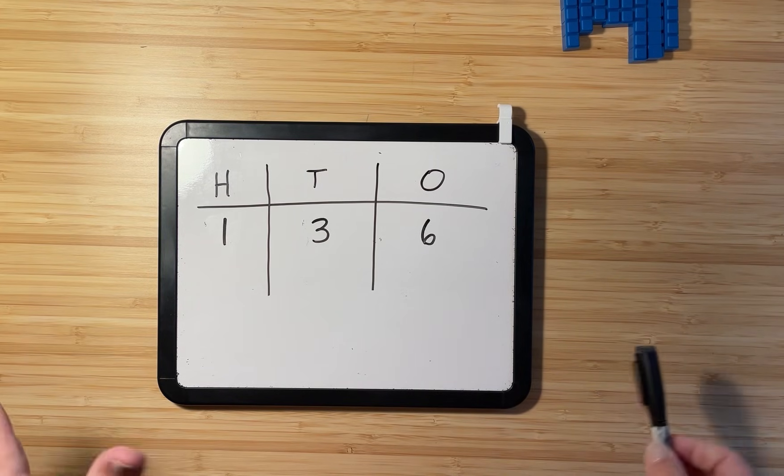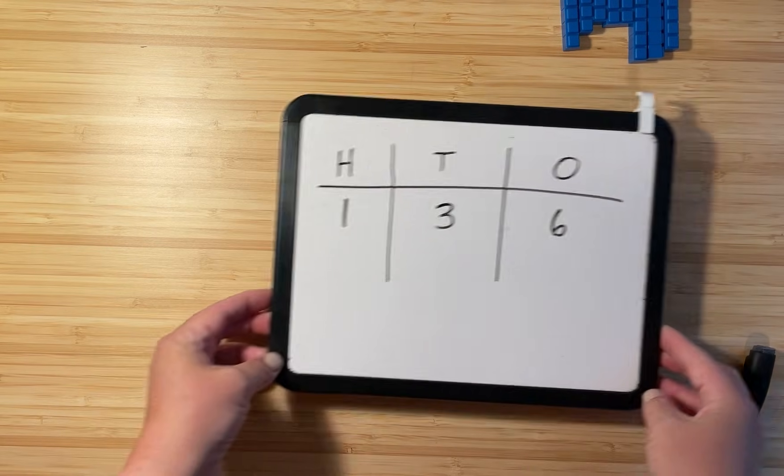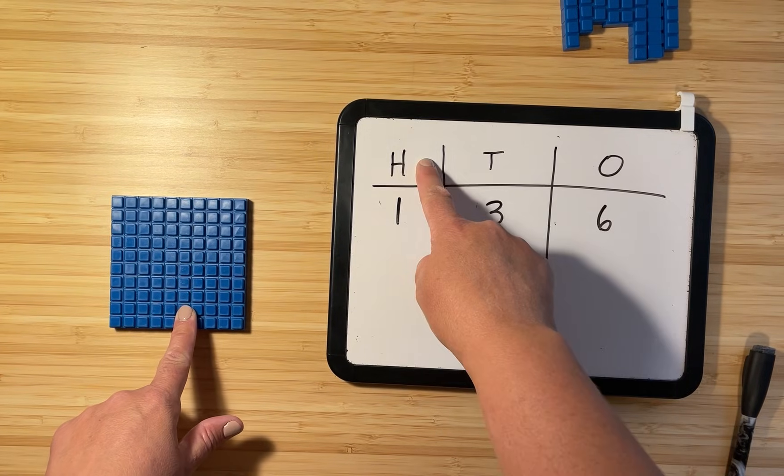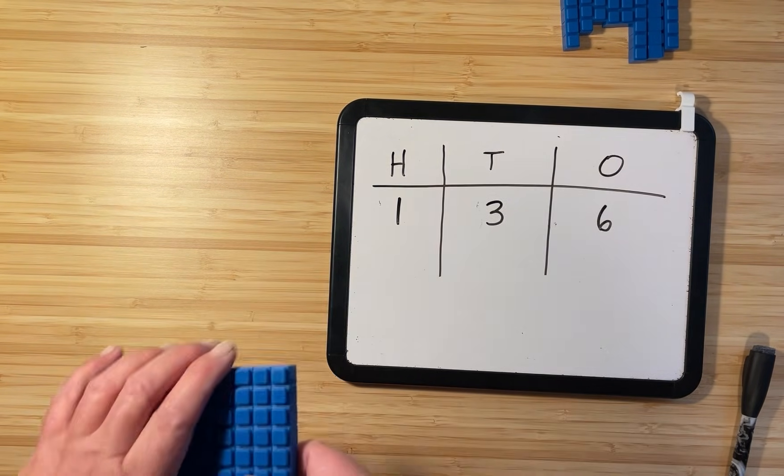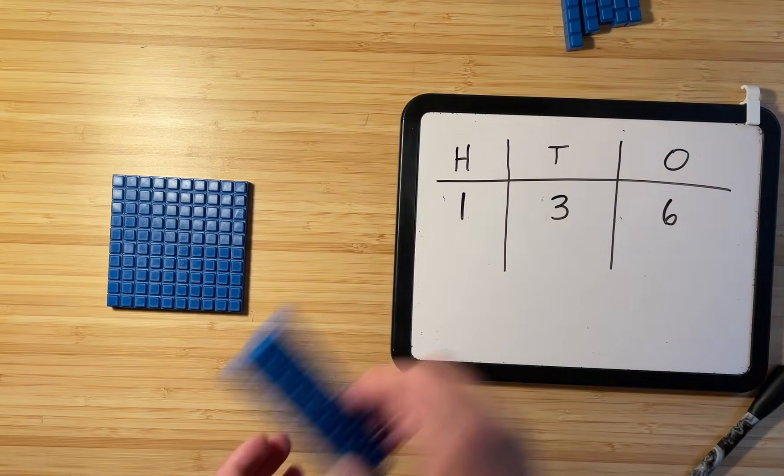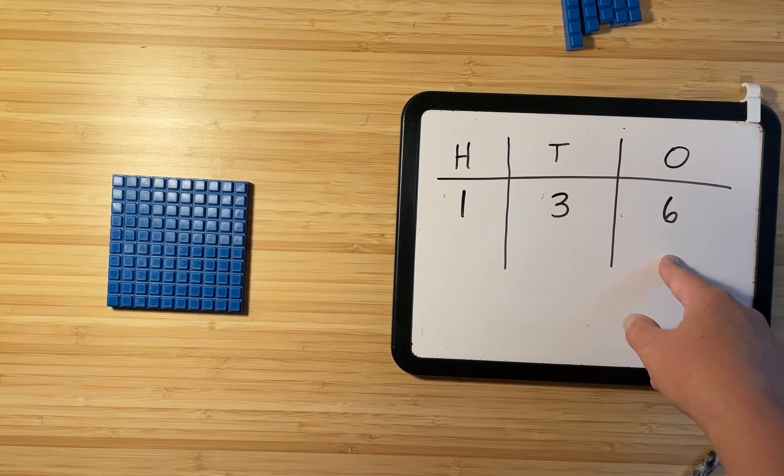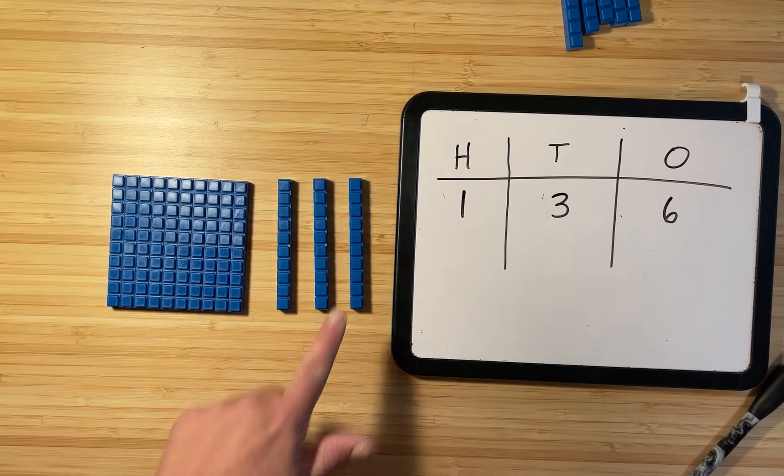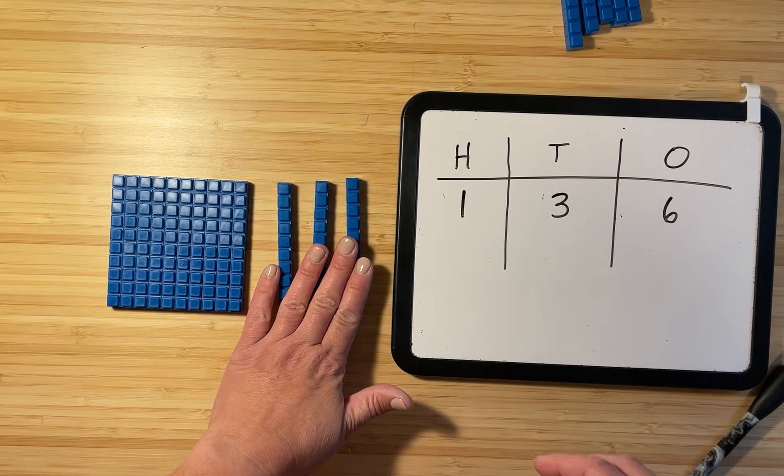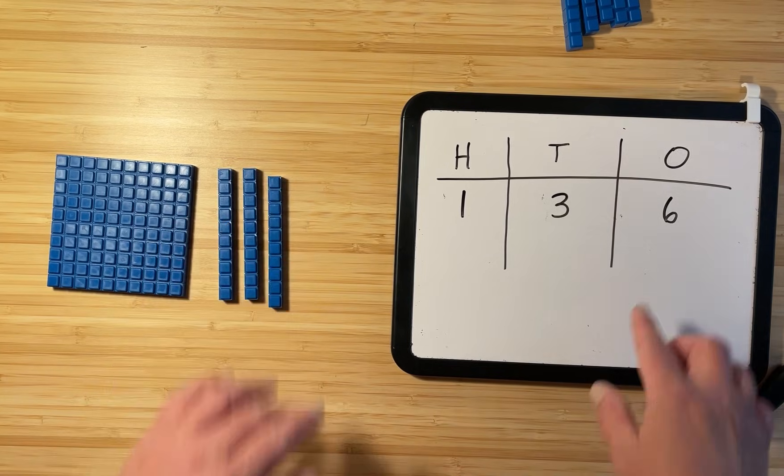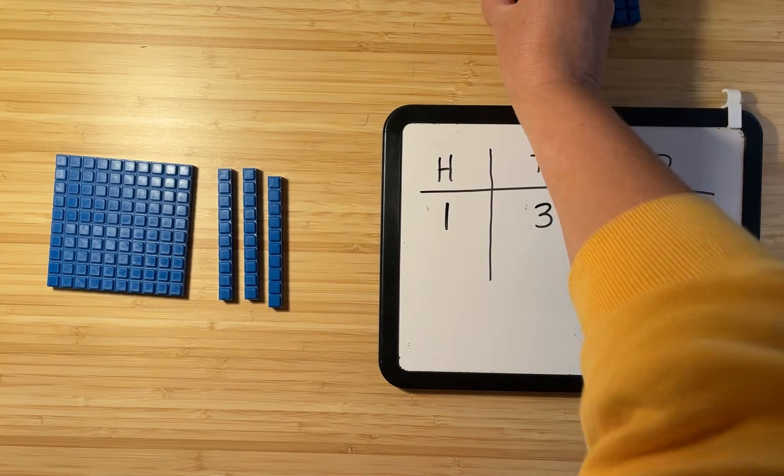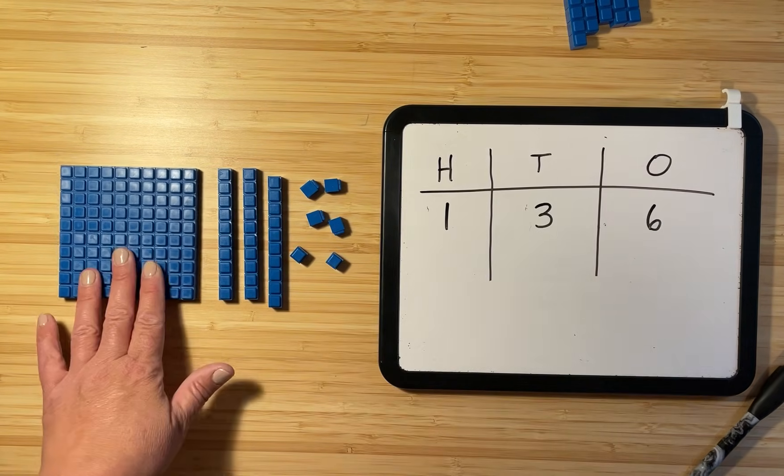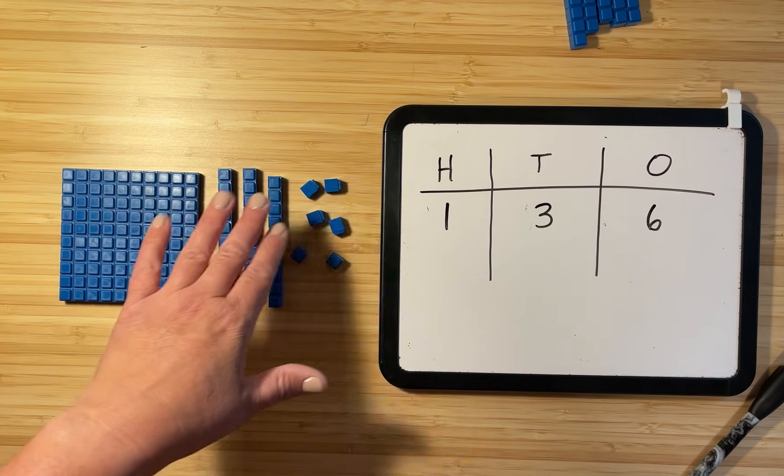Go ahead and take a minute to build that with your base 10 blocks, 136. If you need more time, you can go ahead and pause. But if you're ready to go, I'm going to keep going. What does your 136 look like? Well, we should have one hundred block. So there's one group of 100. Then we should have, how many tens do we have in this number 136? We have three tens. So there's 10, 20, 30. Three tens makes 30. And now we need to add our ones. And how many ones did we have? We had six. So we'll go one, two, three, four, five, six. And now we can see what the number 136 looks like.